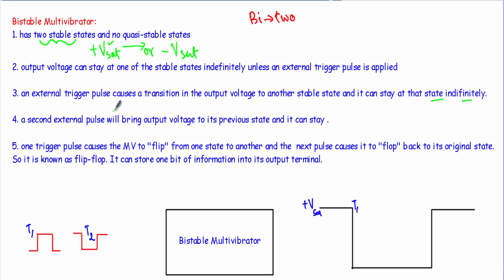Now, if I apply a second external triggering pulse, that pulse will bring back the output voltage to its previous stable state. Due to the application of the second triggering pulse, our output voltage will have a transition from minus Vsat to plus Vsat level, and it will stay at this plus Vsat level indefinitely. Whatever the output voltage — either plus Vsat or minus Vsat — our operational amplifier will retain that voltage at its output terminal as long as we supply power to the circuit. That's why this is known as a bistable multivibrator.